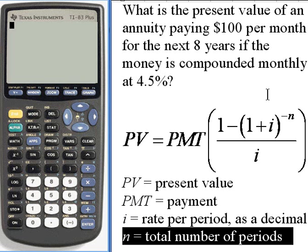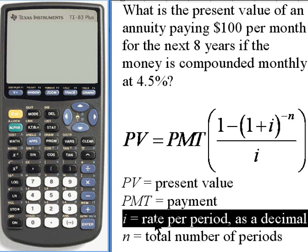So in our case, it's 12 periods per year times 8 years, or 96 periods. That whole thing is going to get divided by i, which once again was the rate per period as a decimal.